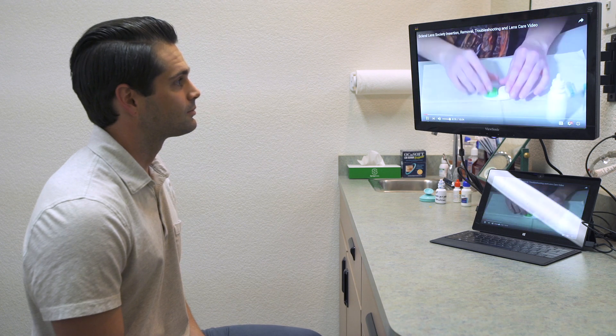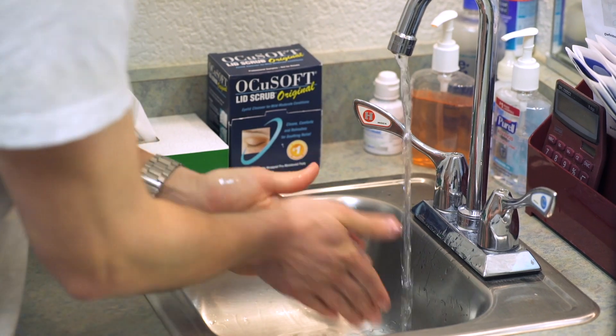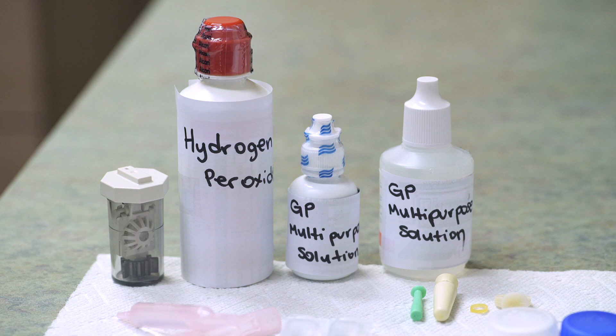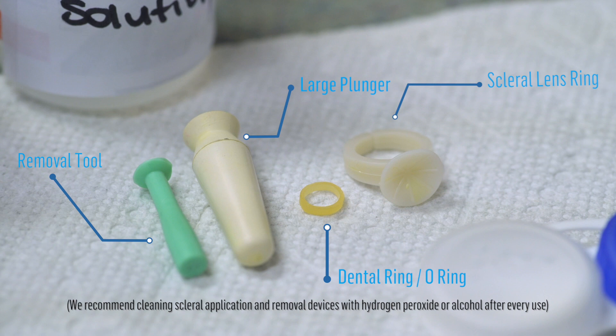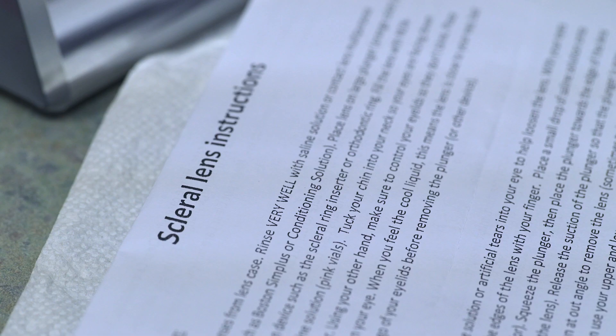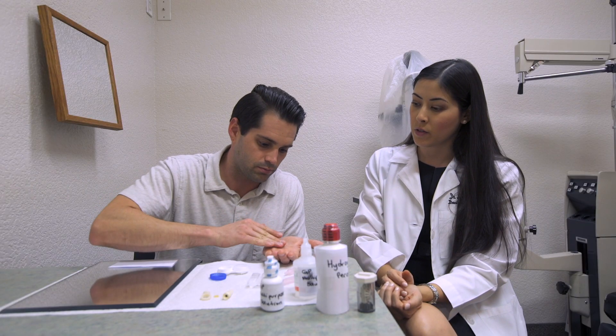You may want to begin a scleral lens dispense by having the patient watch a free video about care and handling of scleral lenses, which can be found on sclerallenses.org. Next, have the patient thoroughly wash their hands with an oil-free soap and lint-free towel. Prepare your station with items such as gas-permeable contact lens solution, application and removal devices, lens cases, non-preserved saline, and written instructions. If the patient already has the lenses in, begin with lens removal techniques; otherwise, begin with lens application training.